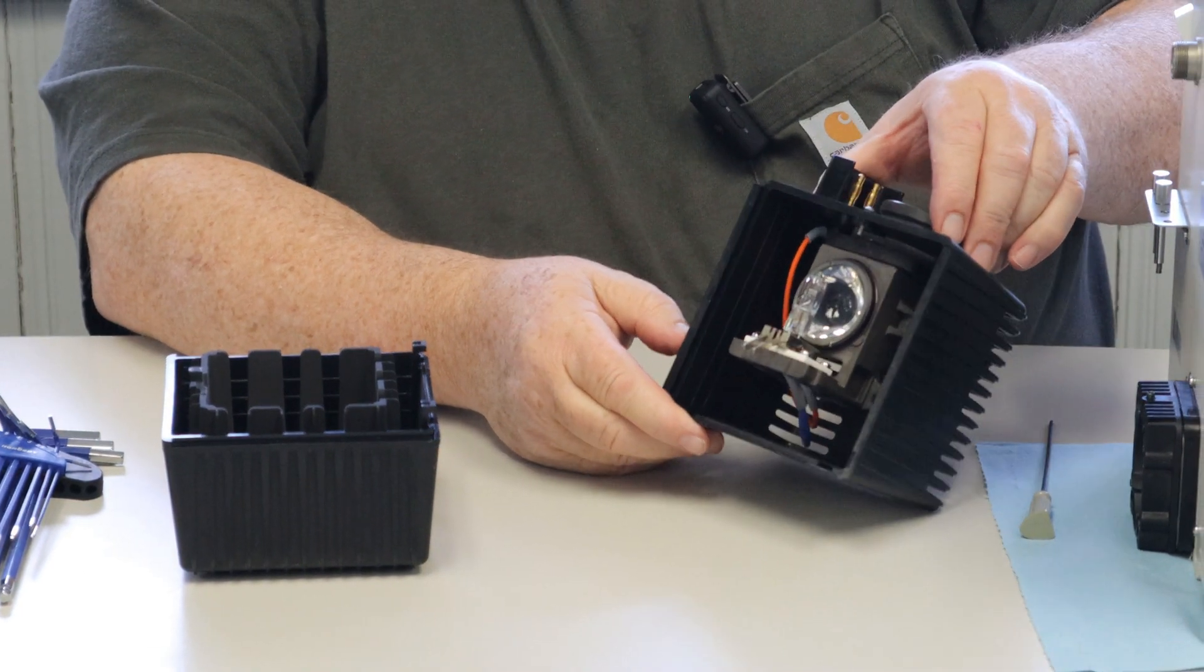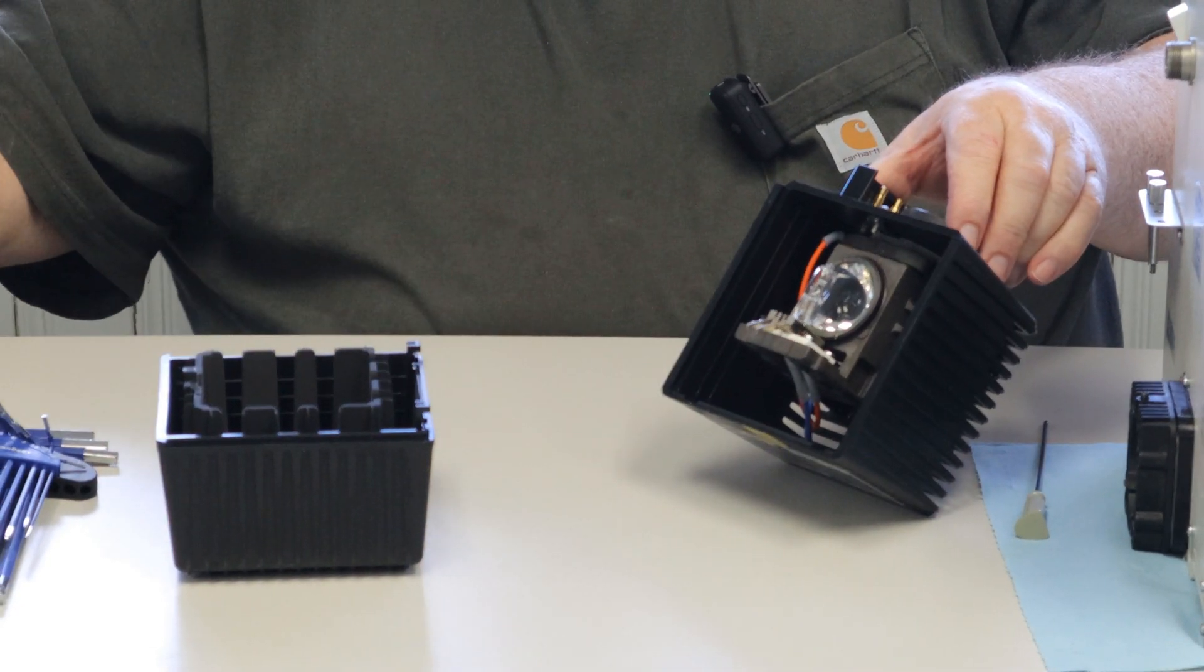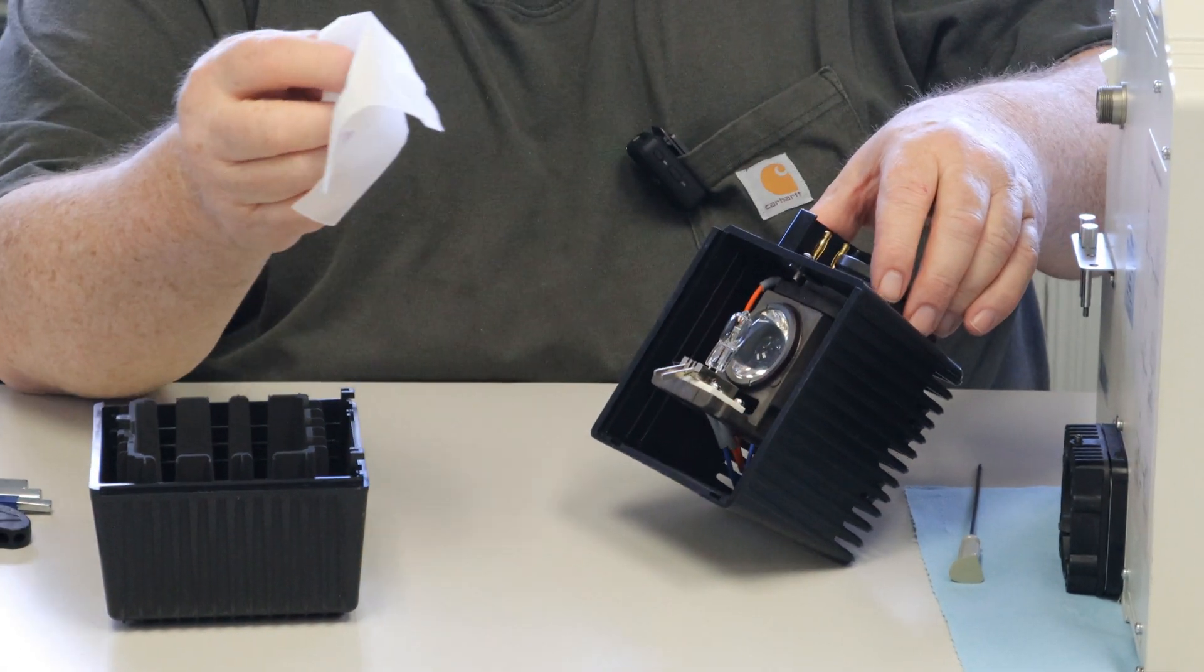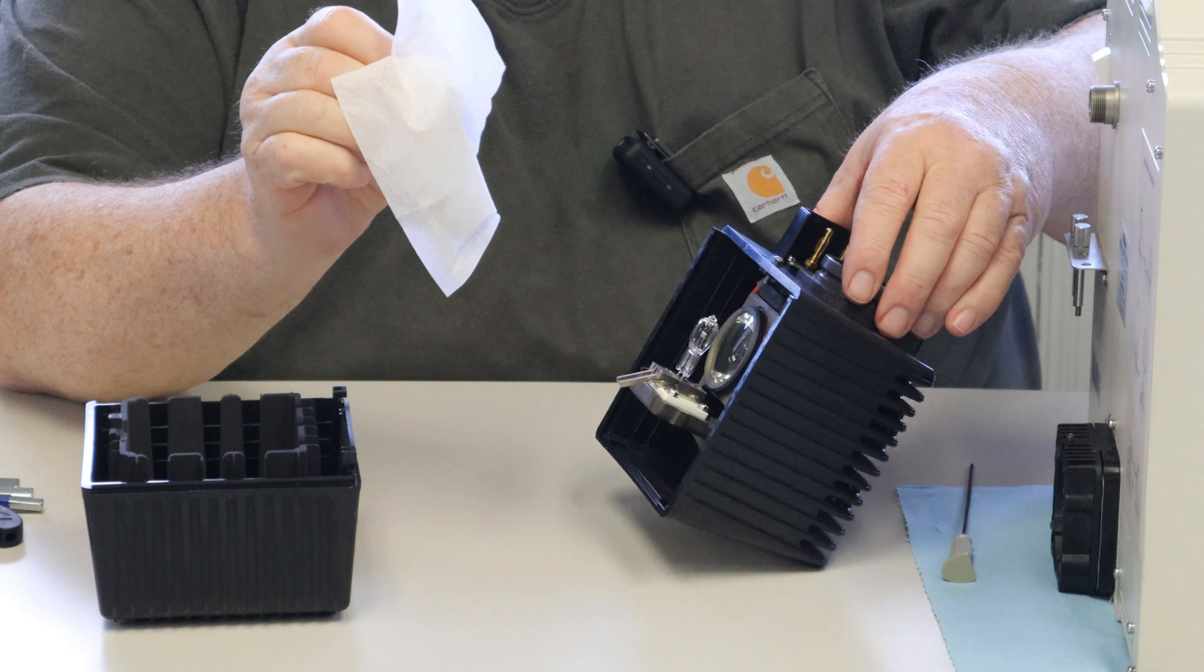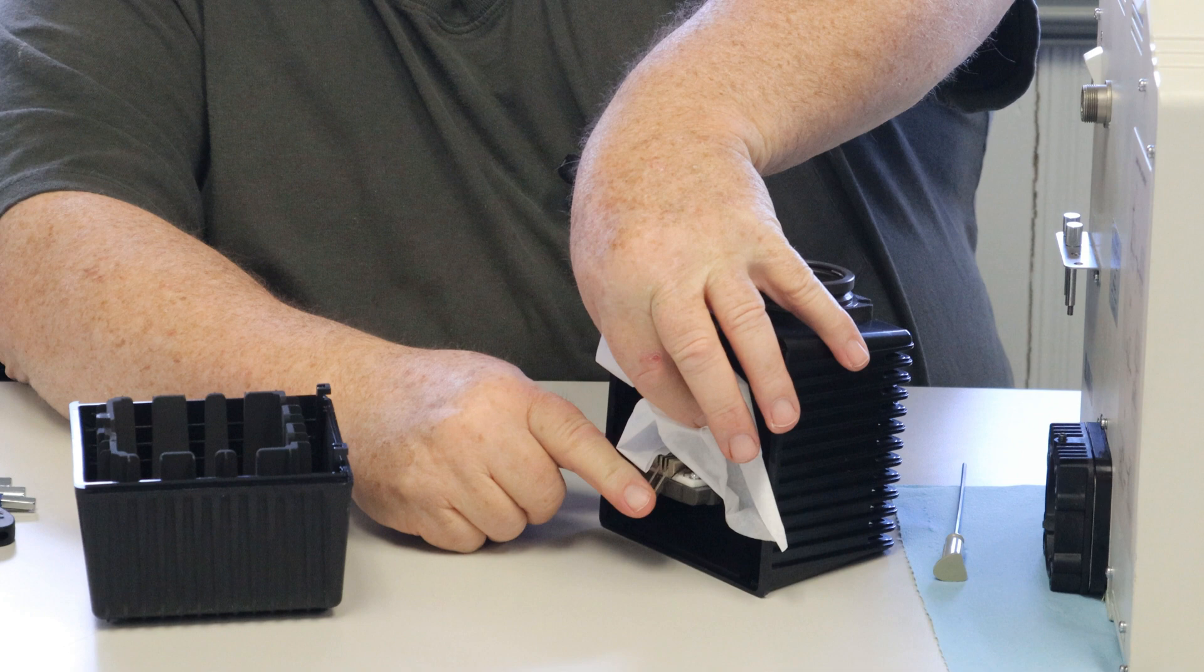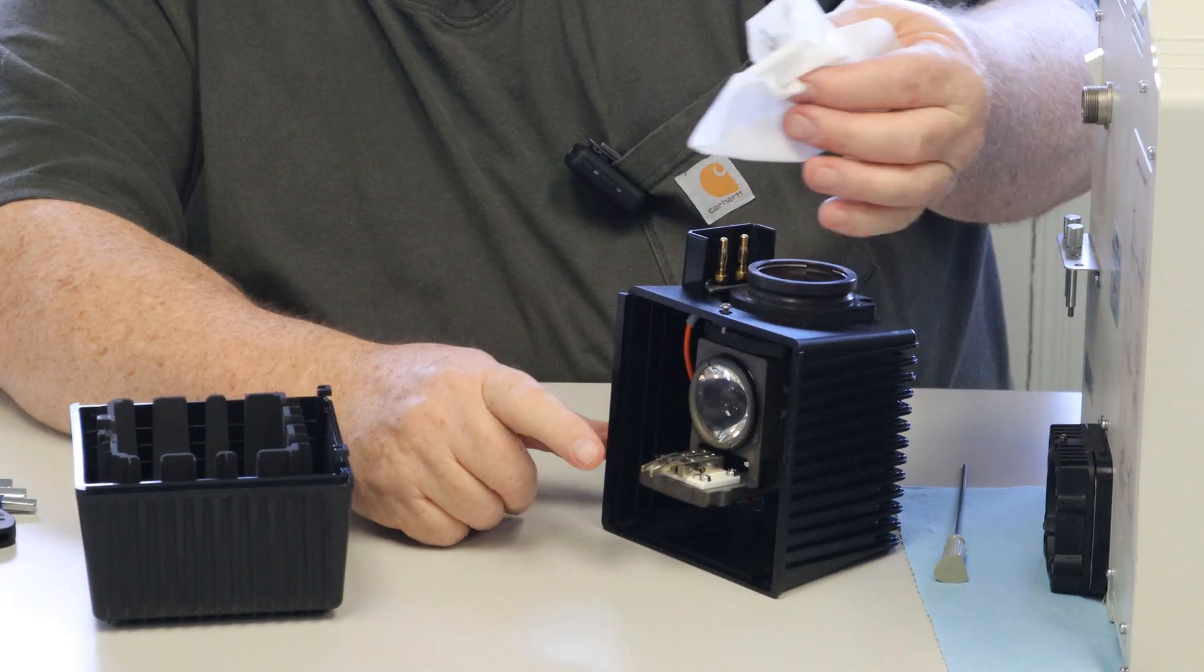Your bulb comes out much similar way than other ones. Again, use a tissue so you do not get your fingerprints on the globe of the lamp bulb. Put your two prongs down and the bulb comes out very easily.